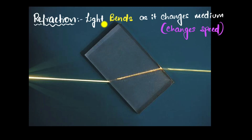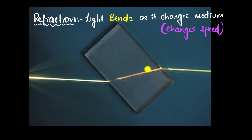Refraction is the phenomenon where light bends when it changes medium, and it happens because it changes its speed when it goes from one medium to another. One part of physics would be figuring out exactly how much it bends, and then using that to figure out the geometry — how we get images, why images are big or small and inverted. We call that geometrical optics.